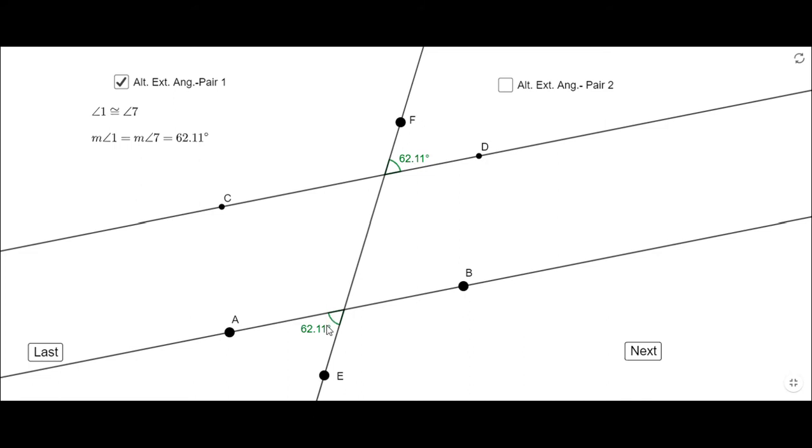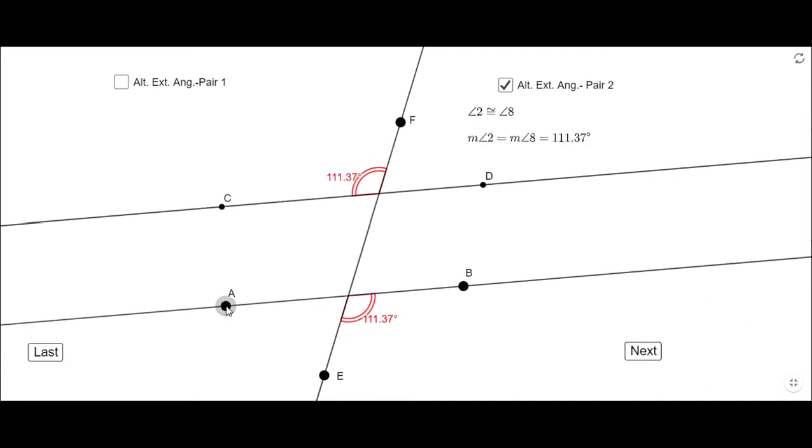These two angles are congruent, they have the same measure of 62. We have one more pair, these two angles, and if you notice they have the same measure of 118 degrees in this case.